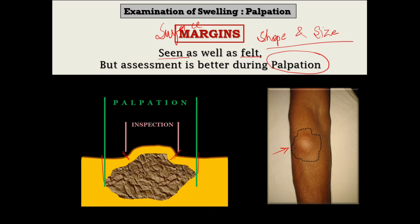I would suggest to students that if you come across any such case, please do not change the findings of your inspection — in inspection you write down what you can see. In this case, I will write in inspection: there is a hemispherical swelling on the forearm of approximately two centimeters with regular margins. But in palpation, my findings will be different.